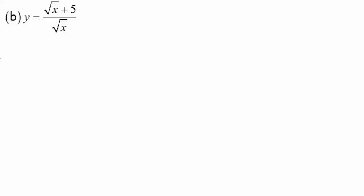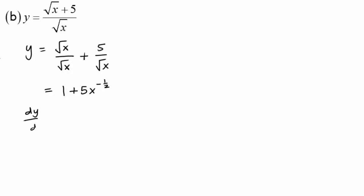For b, before we differentiate, we need to simplify the function so that it will be easier to differentiate. So y is equal to √x divided by √x, plus 5 over √x. So √x divided by √x gives us 1, plus 5 over √x is 5x to the power of negative one-half. Now let's find our first order differentiation: dy/dx is equal to negative 5 over 2, and x to the power of negative one-half minus 1 gives us negative 3 over 2.